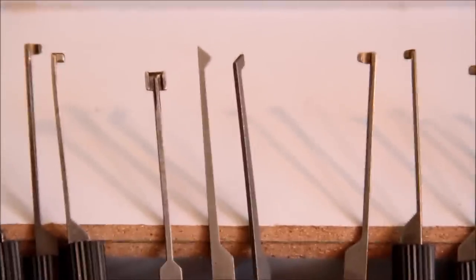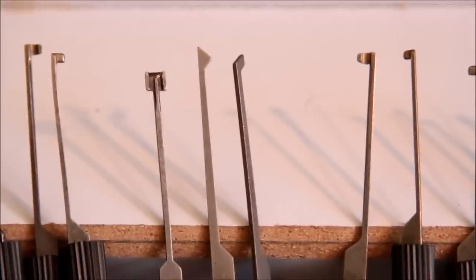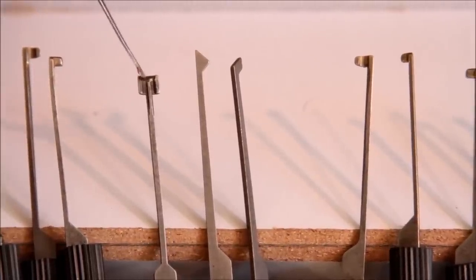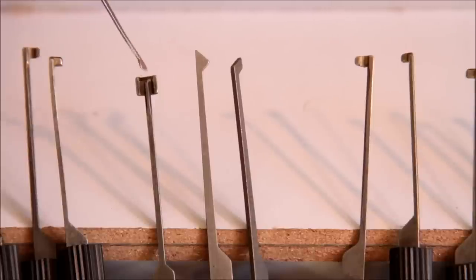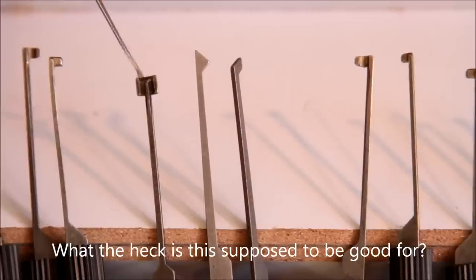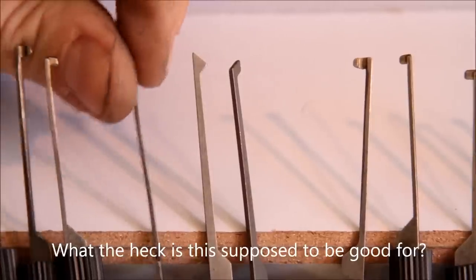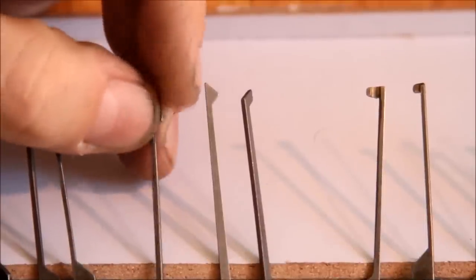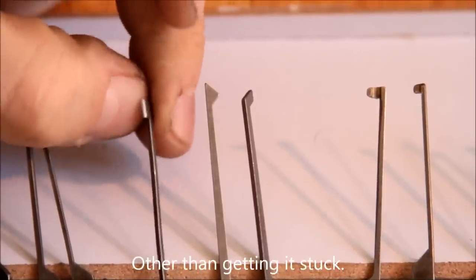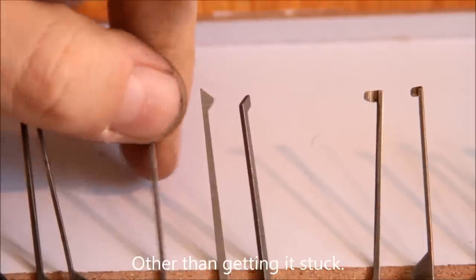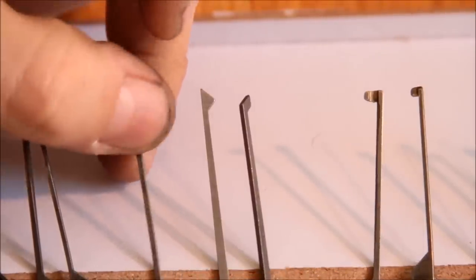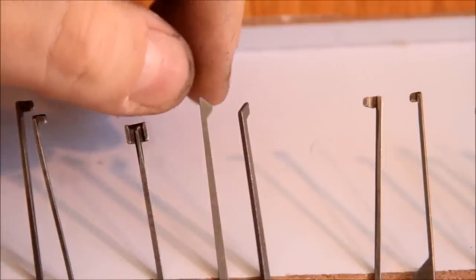These guys now, you probably haven't seen me using these very much. Every dimple pick set that I get has one of these. I have no idea what this is for. Maybe somebody can respond, but I've never found any lock that this is useful for doing anything with. It's really thick. It's very bulky. It doesn't get in between the wards. I have no idea what this is for. Maybe some kind of particular special lock. And if someone can explain that to me, that'd be great.